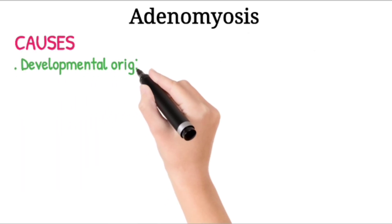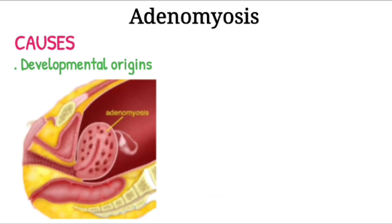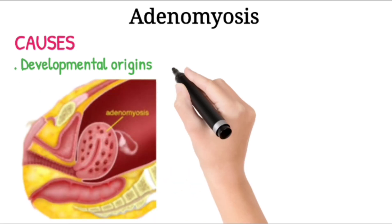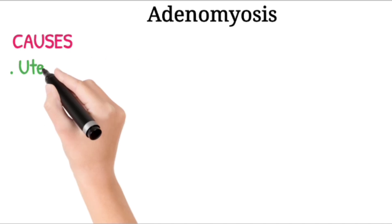Developmental Origins. Other experts speculate that adenomyosis originates within the uterine muscle from endometrial tissue deposited there when the uterus first formed in the fetus.